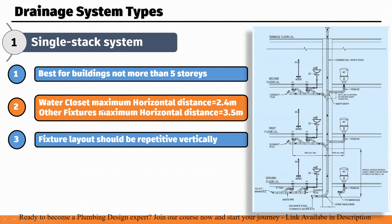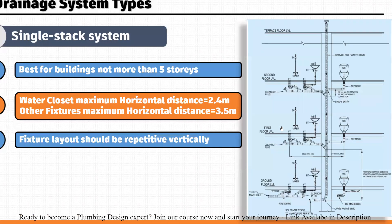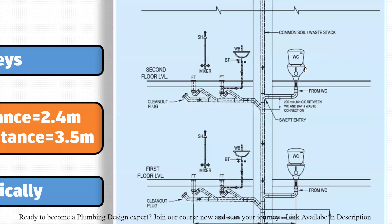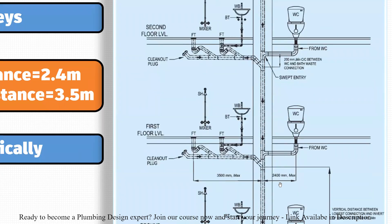The second point concerns the water closet maximum horizontal distance. If you are connecting a water closet to this vertical pipe, the horizontal distance between the WC and the pipe should not be more than 2,400 mm — it must be less than 2,400 mm.